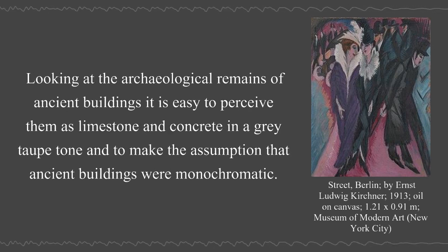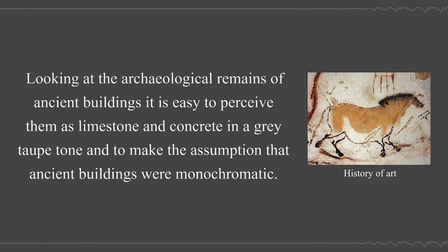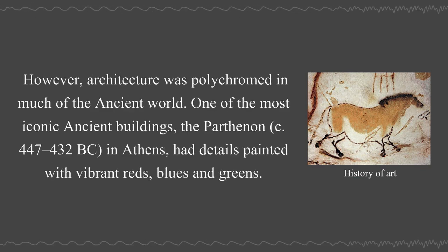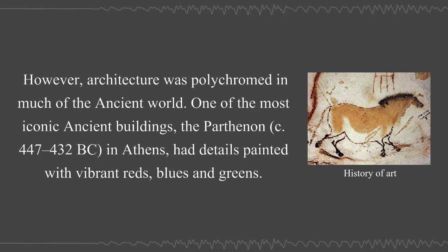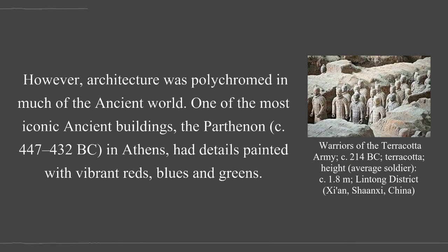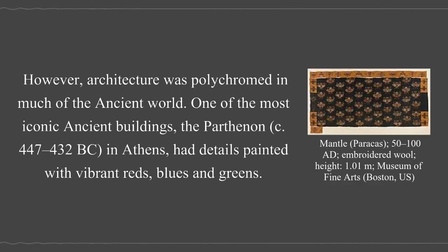Looking at the archaeological remains of ancient buildings, it is easy to perceive them as limestone and concrete in gray tones and to make the assumption that ancient buildings were monochromatic. However, architecture was polychromed in much of the ancient world. One of the most iconic ancient buildings, the Parthenon circa 447–432 BCE in Athens, had details painted with vibrant reds, blues, and greens.